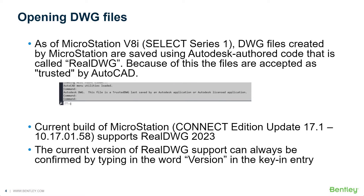As of MicroStation VDI Select Series 1, DWG files created by MicroStation are saved using Autodesk-authored code called RealDWG, and because of this, files are accepted as trusted by AutoCAD. So what this means is if you create a DWG file in MicroStation, you should see a message in AutoCAD that this is a trusted DWG.